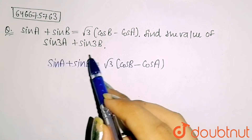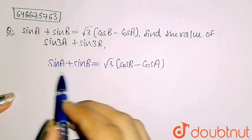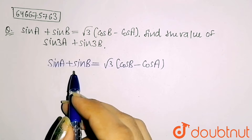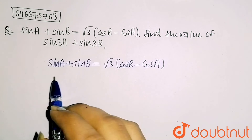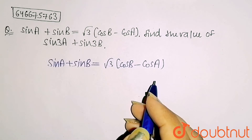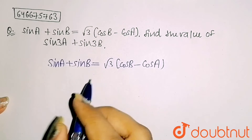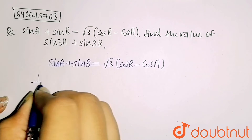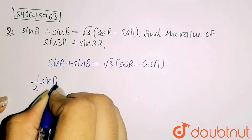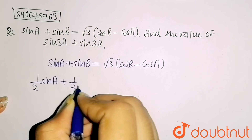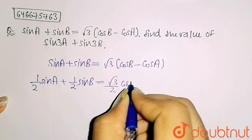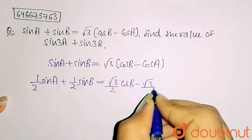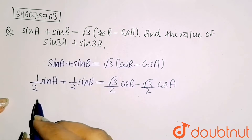So in this part I am applying the formula of sin C plus sin D. But before that we will divide the whole equation by 2. So dividing by 2, I get 1/2 sin A plus 1/2 sin B equals root 3 by 2 cos B minus root 3 by 2 cos A.